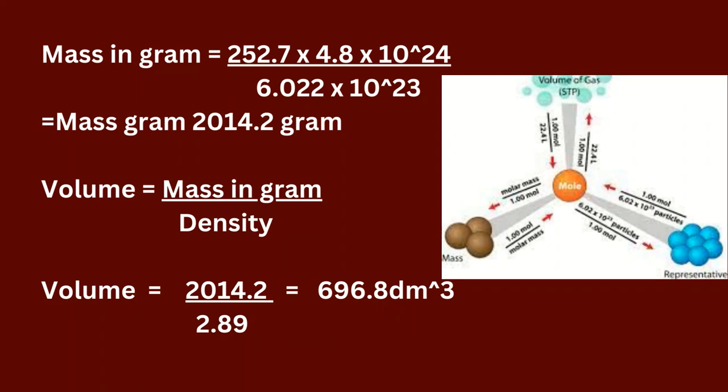Volume = 2014.2 ÷ 2.89 = 696.8 cubic decimeters. Result: the volume of CHBr3 at a density of 2.89 grams per cubic decimeter is 696.8 cubic decimeters.